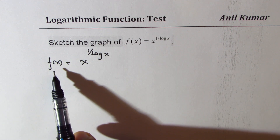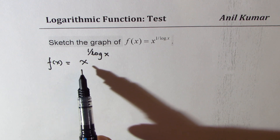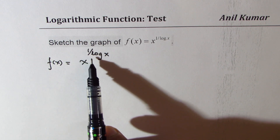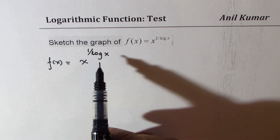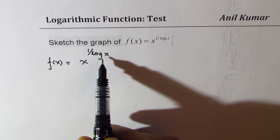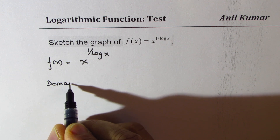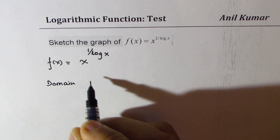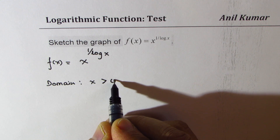I've rewritten the function here as f of x equals x to the power of 1 over log x. Let's begin with the domain of the function. Log x restricts our domain, so we know x has to be greater than 0.